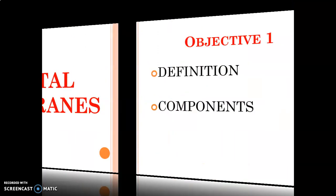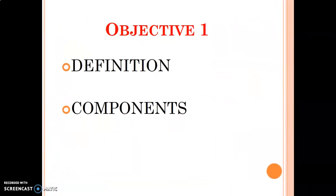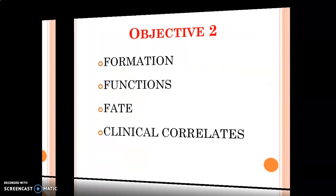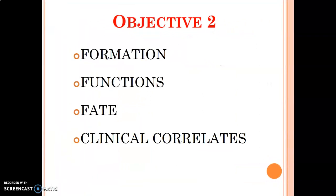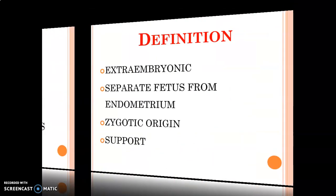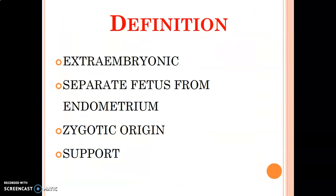Fetal membranes are extra-embryonic — they are not part of the embryo. They are outside the embryo and separate the fetus from the endometrium. Their origin is from the zygote, and the main reason they are important is because they support the developing embryo.